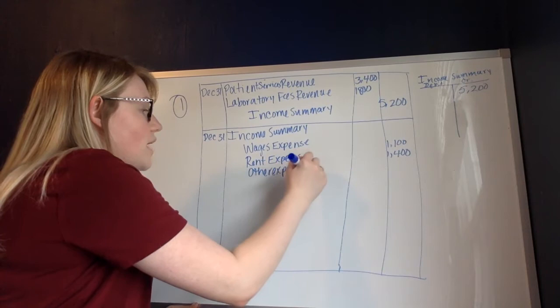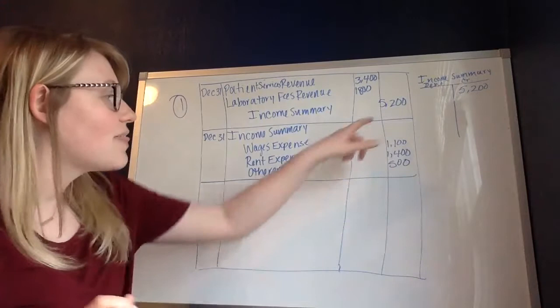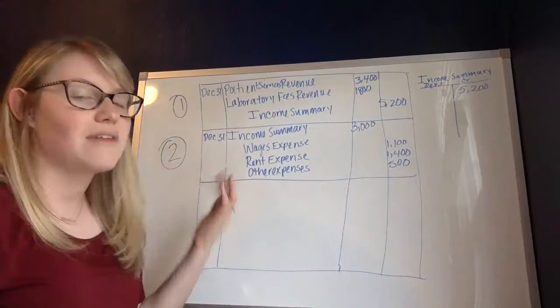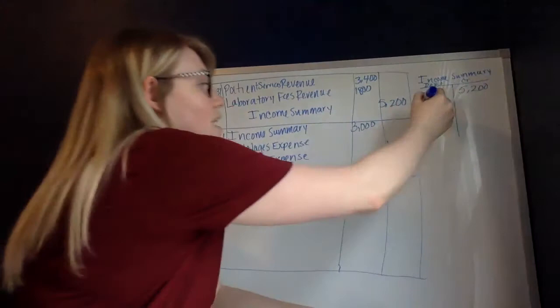It's important that you make sure you're listing each of the expenses out and not just lumping them into one account, because they're each their own separate accounts that have to be zeroed out. So I add these together to know how much I'm going to debit my income summary — it gives me $3,000. So that's what I'm going to put in the debit for my income summary, and that takes care of my second step. I've just closed my expense accounts, and I'll put this debit in the debit column of my T-chart.